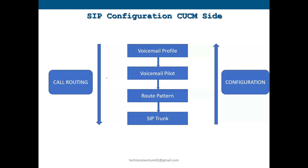Now let's discuss the SIP configuration on the CUCM side. The call routing goes from top to down — it hits the voicemail profile first, then the voicemail pilot. There is no need to create a hunt pilot number in SIP integration because we are not doing any hunting. We just create a voicemail pilot number and a route pattern. Once the call hits the route pattern, there is a SIP trunk under it pointing to Unity.